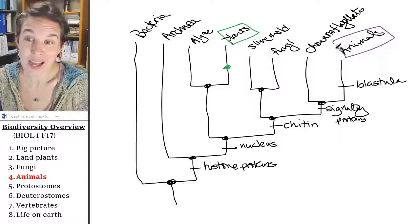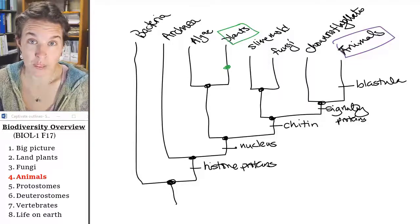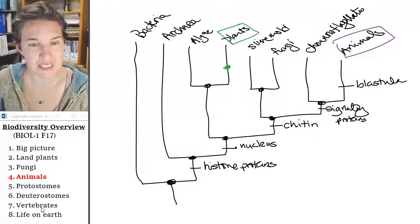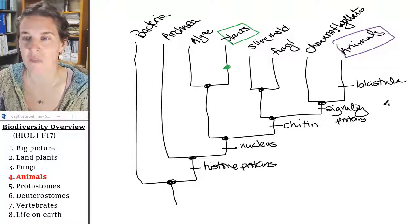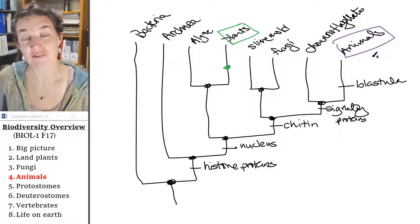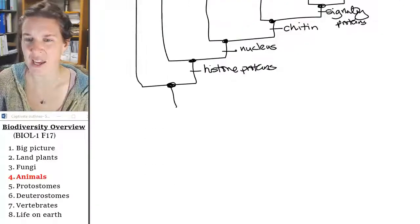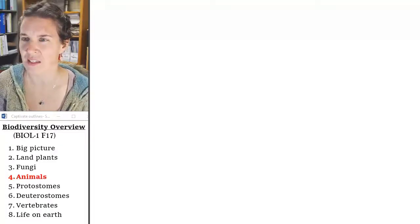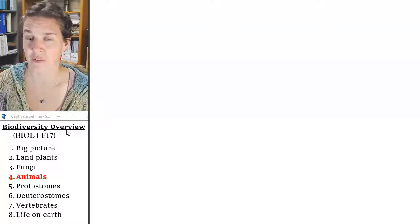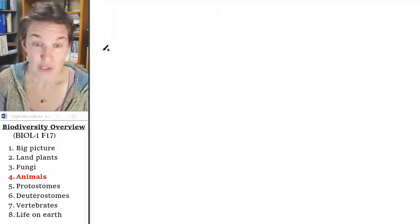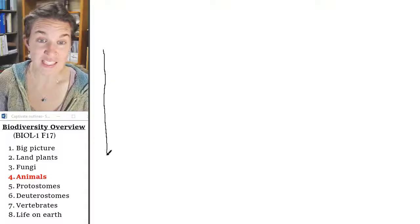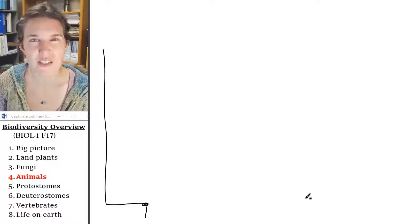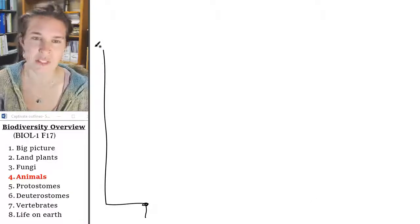I'm going to try to make one animal cladogram and include everybody that I want you to know on it, but we're going to build it out in four little clips here. So the blastula defines everybody that we're going to look at next. We know that the sister protist to all animals is the choanoflagellate.